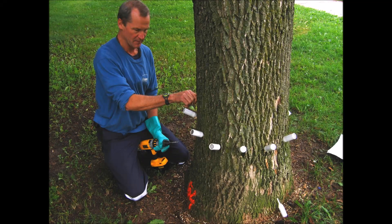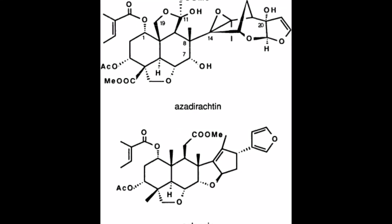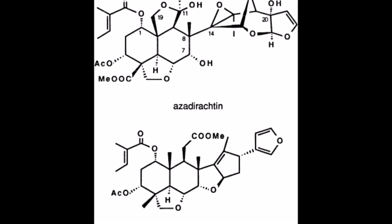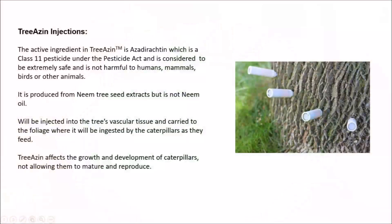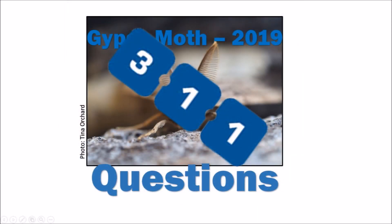The product being used for injected city trees is called Triazin, whose active ingredient is azadirachtin, a class 11 pesticide under the Pesticide Act. It is considered to be extremely safe and is not harmful to humans, mammals or birds. It is also used on or near organic crops. It is produced from neem tree seed extracts but is not neem oil. Triazin is injected into the tree's vascular tissue and carried to the foliage where it will be ingested by the caterpillars as they feed. Triazin affects the growth and development of caterpillars, not allowing them to mature and reproduce. This concludes our City of Toronto Gypsy Moth Spray Presentation for 2019. Thank you for watching and please contact 311 with any further questions.